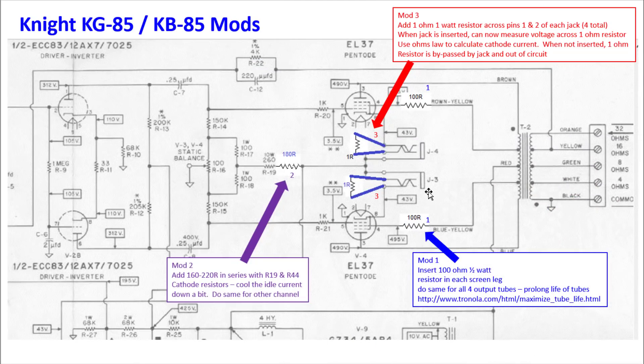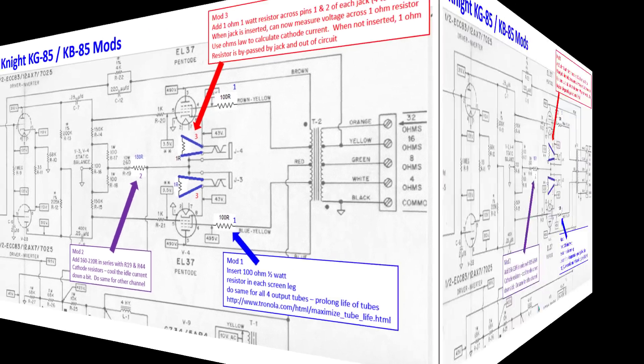Let's take a look at how we would do that. It's fairly simple. What you do here, insert a 100 ohm, half watt will work fine, in each leg of the screen between the transformer and the actual output tube screen, which is pin number four. You do the same on all four of these. You just take the wire going into pin number four, unsolder it from there, and then solder in this 100 ohm resistor across all four of them.